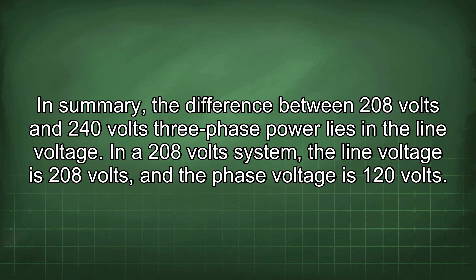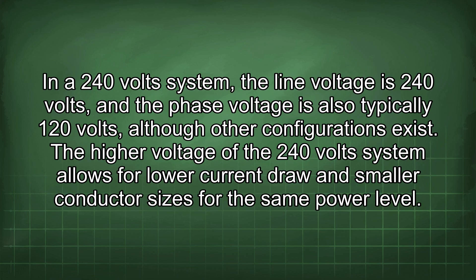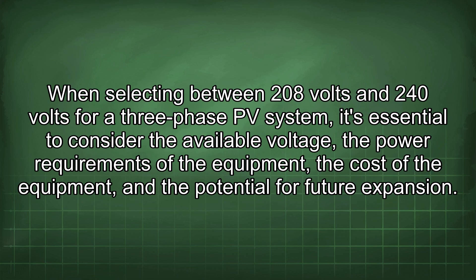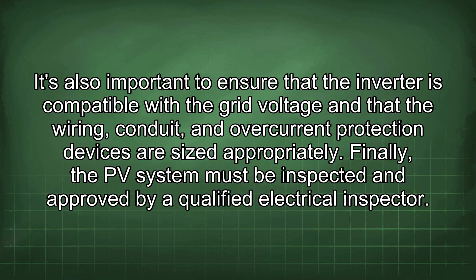In summary, the difference between 208-volt and 240-volt three-phase power lies in the line voltage. In a 208-volt system, the line voltage is 208 volts and the phase voltage is 120 volts. In a 240-volt system, the line voltage is 240 volts and the phase voltage is also typically 120 volts, though other configurations exist. The higher voltage of the 240-volt system allows for lower current draw and smaller conductor sizes for the same power level. When selecting between the two for a three-phase PV system, consider the available voltage, power requirements, equipment cost, and potential for future expansion, while ensuring the inverter, wiring, conduit, and overcurrent protection devices are all sized appropriately.